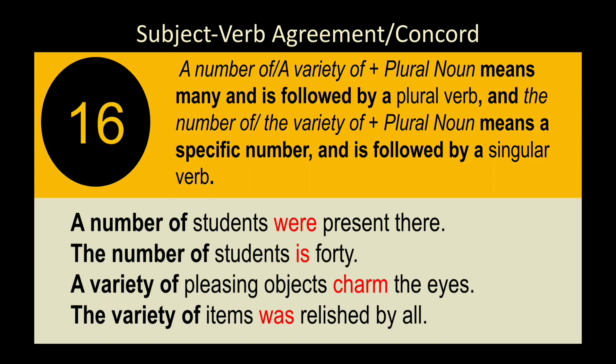Rule 18: 'A number of' and 'a variety of' plus a plural noun take a plural verb (they signify many). 'The number of' and 'the variety of' take a singular verb (they signify a specific number or a unit). Examples: 'A number of students were present.' 'The number of students is 40.' 'A variety of pleasing objects charm the eyes.' 'The variety of items was released.'